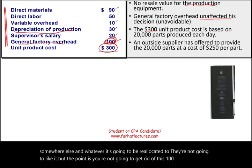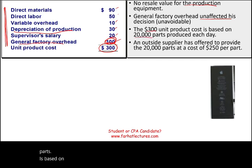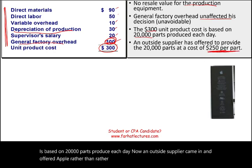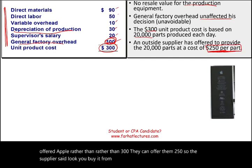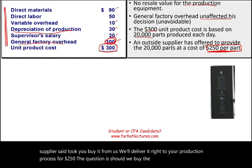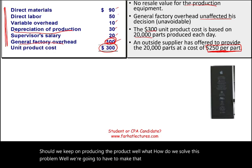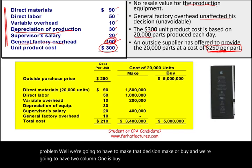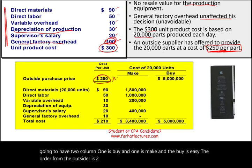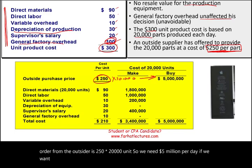The $300 cost is based on 20,000 parts produced each day. An outside supplier offered Apple a price of $250 per unit — delivering right to their production process. The question is: should Apple buy or keep producing? The buy option is straightforward: $250 times 20,000 units equals $5 million per day if they purchase from an outside supplier.